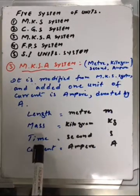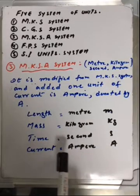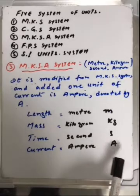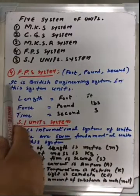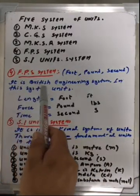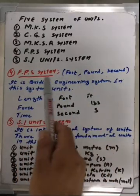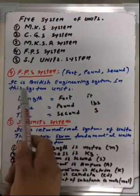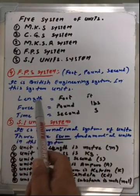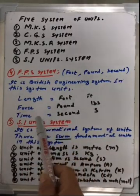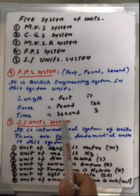Number four, FPS system: F for foot, P for pound, S for second. It is the British engineering system. In this system, length is in foot (ft), force in pound (lbs), and time in second (s).